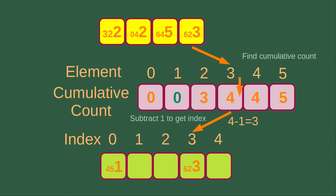After putting the first element from the unsorted list, we have to update the cumulative count to 0. And then we go to the second last element in the unsorted list, which is 623. We just focus on the units digit, which is 3. Element 3 has a cumulative count of 4. We subtract 1 from 4 to get 3, so 623 goes to index number 3.